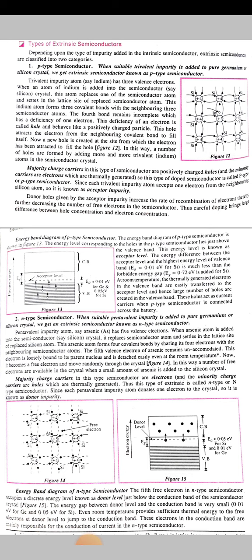Pentavalent impurity like arsenic has 5 valence electrons. When we add arsenic atoms in the semiconductor crystal, it replaces semiconductor atoms and settles down in the site of replaced silicon atoms. The arsenic atom forms 4 covalent bonds, sharing the 4 electrons with the neighboring atoms.